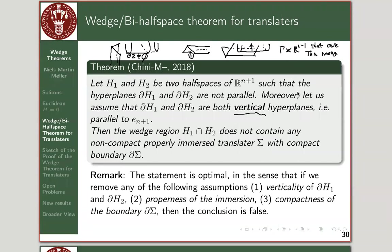In the second video, we ended by stating the wedge theorem, which restricts where in space our self-translating hypersurfaces can live — they cannot live in these vertical wedge-shaped regions. Now we're going to prove this. The theorem says: if you have two vertical and non-parallel half spaces in R^(n+1), then a properly immersed translator cannot sit inside that region.